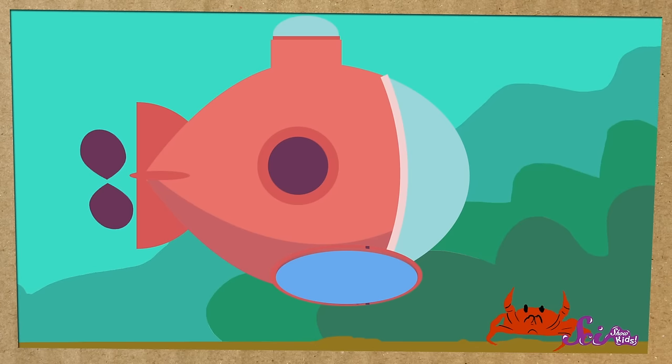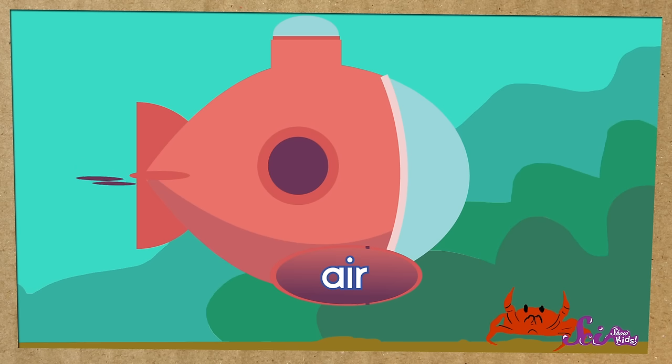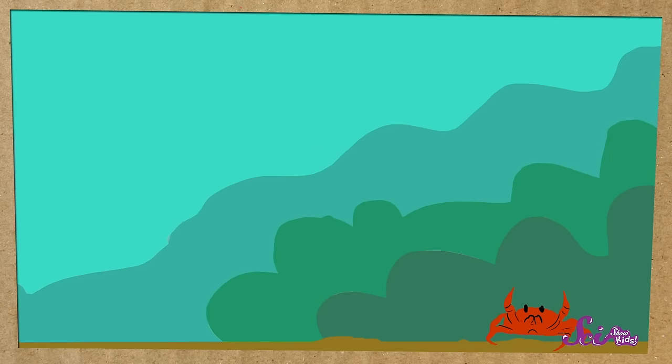But after the submarine is done exploring under the water, there's one more thing it needs to be able to do. Maybe you've already guessed what it is. We know how submarines dive under the water, but how do they get back up? Well, remember how submarines bring along extra air? If there are people on the submarine, they can use it to breathe. But it's not only for breathing. When it's time for the submarine to go back up to the surface, it pushes air into the ballast tanks and water out. That makes the submarine lighter for its size, so it can float up to the top of the water.